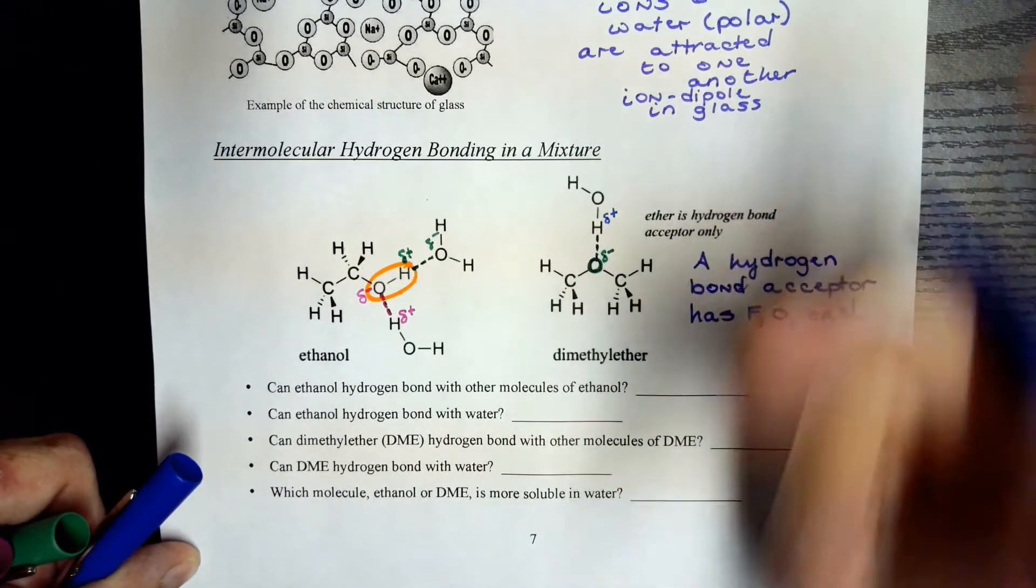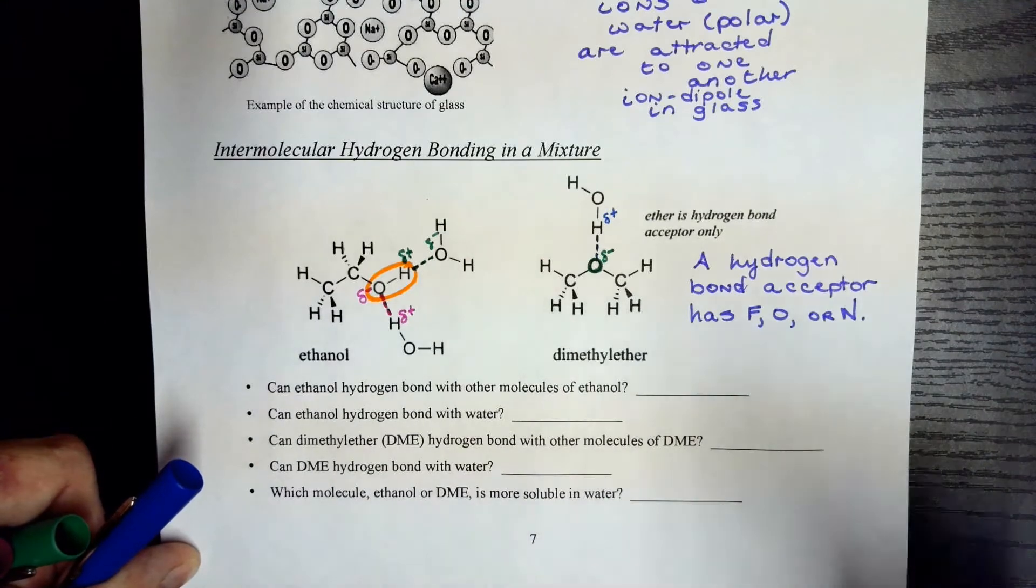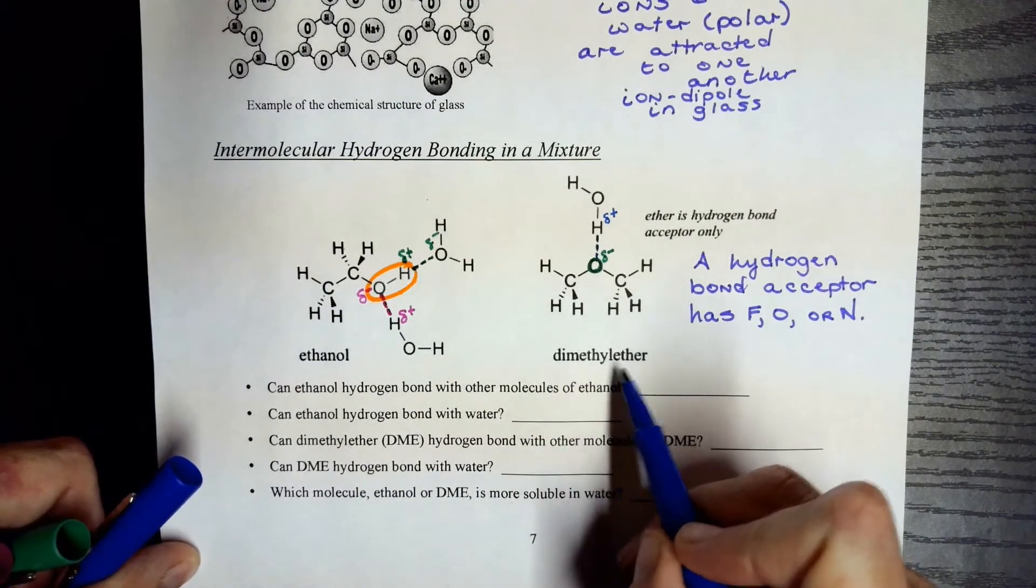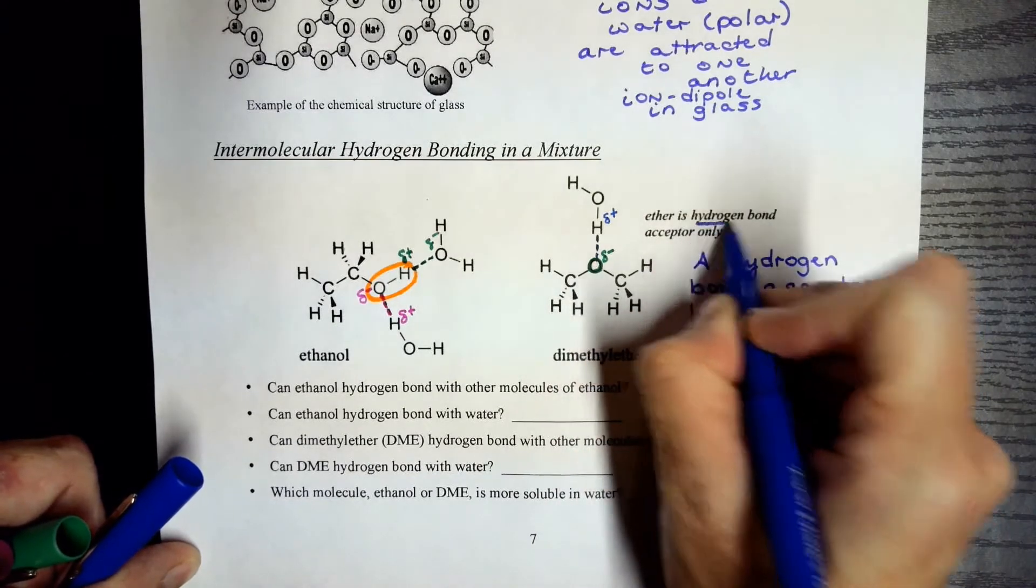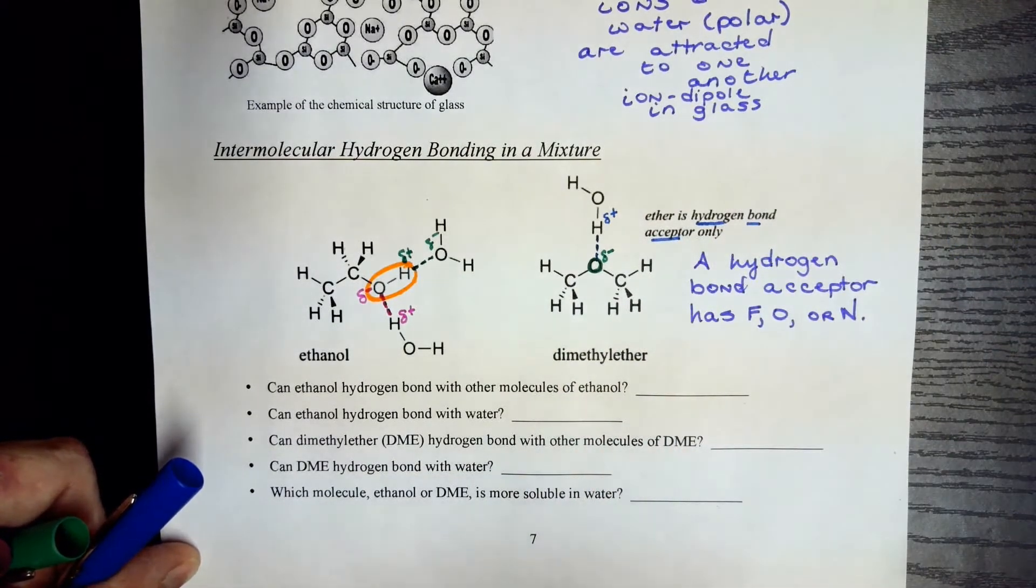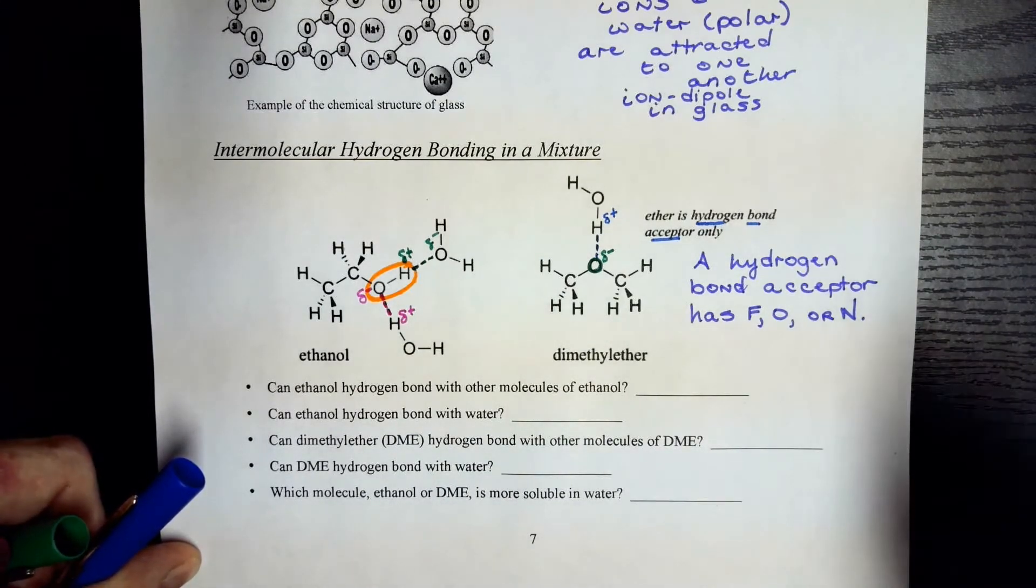However, this relationship, this intermolecular force is only going to look one way. The dimethyl ether will always be a hydrogen bond acceptor. It will never be a hydrogen bond donor because it doesn't have the H connected directly to the oxygen.